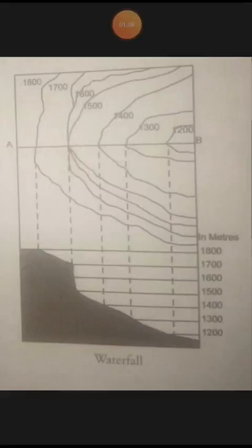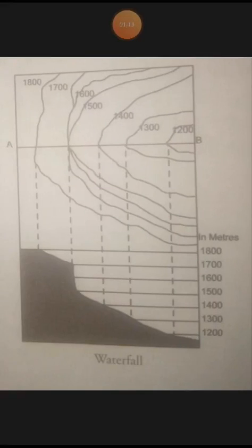The contours representing a waterfall merge into one another while crossing a river stream, and the rapids are shown by relatively distant contour lines on a map.